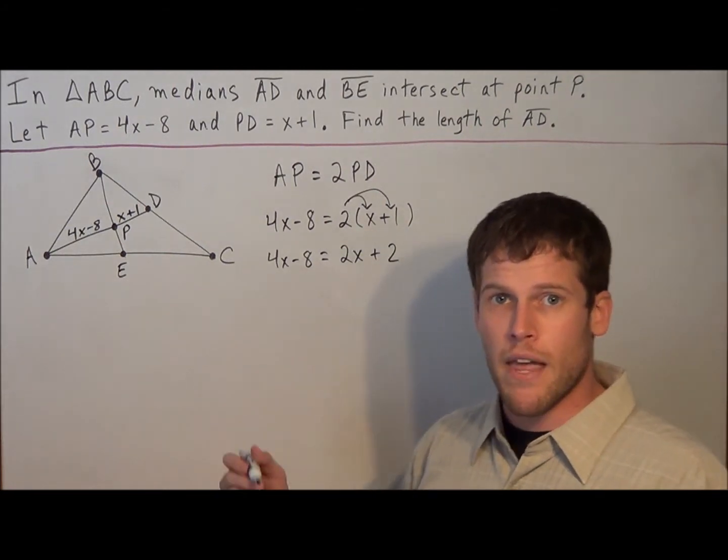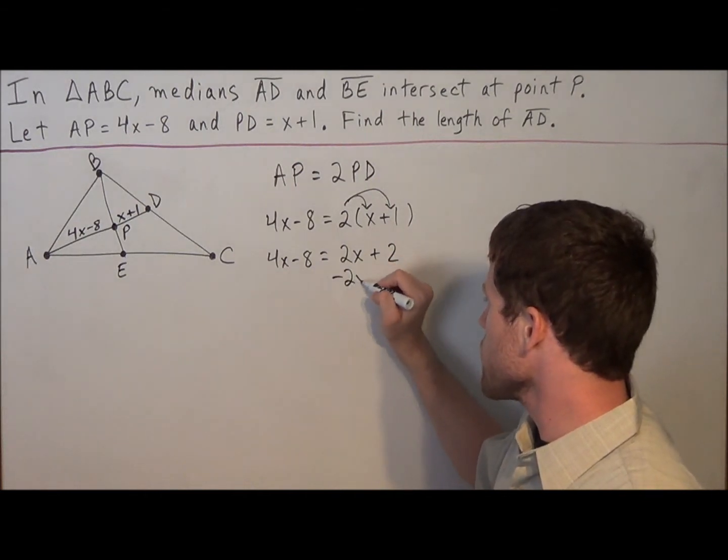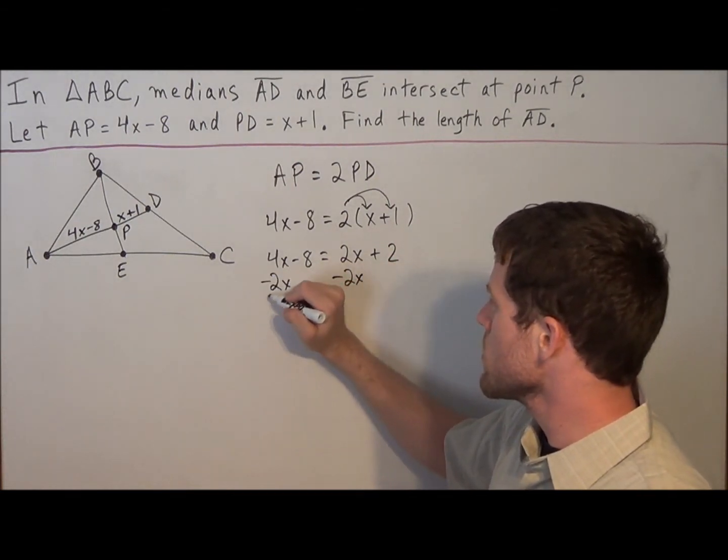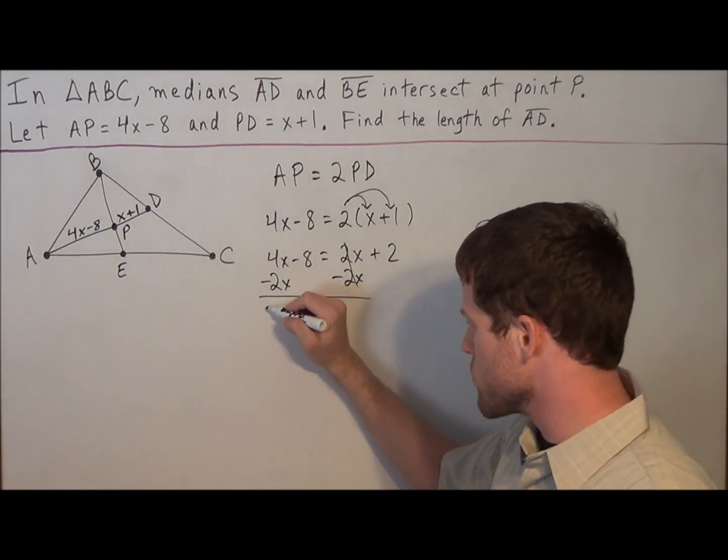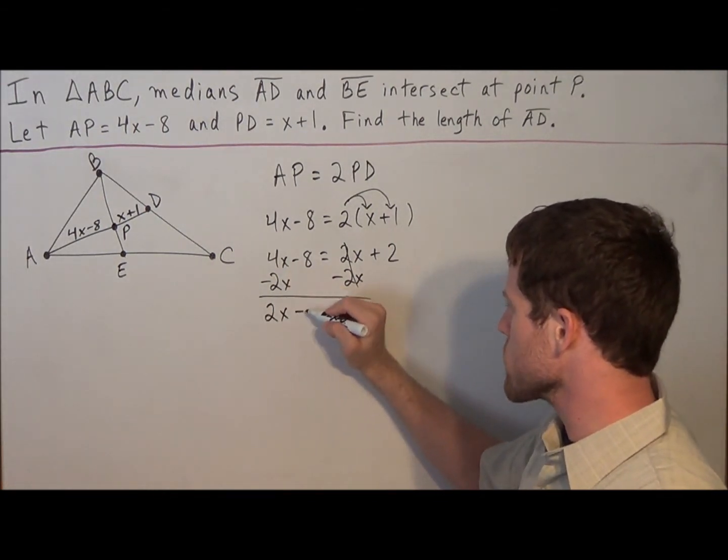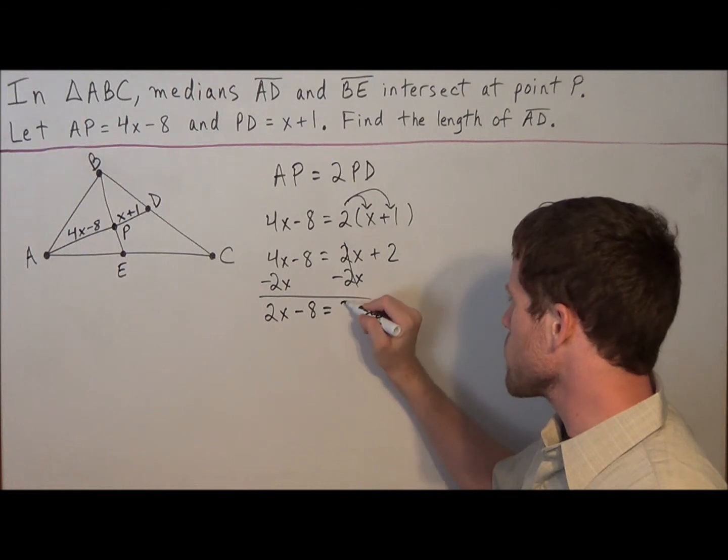So at this step, now we're just solving an equation. We're going to subtract 2x from both sides. 2x minus 2x cancels. We have 4 minus 2 is 2. So you have 2x minus 8 equals 2.